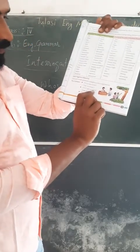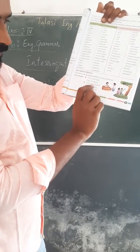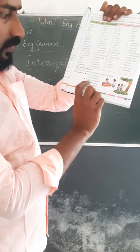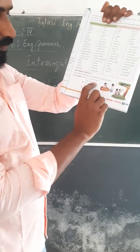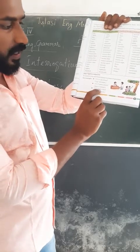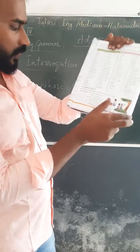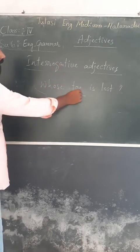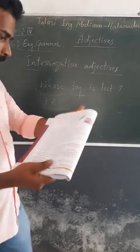'Which pen is yours?' — the word 'which' describes the noun 'pen,' asking a question about it. 'What word is this?' — here 'what' describes the noun 'bird.' Words like 'which,' 'what,' 'whose,' 'where,' 'how,' and 'when' can all be used as interrogative adjectives when they describe a noun or pronoun in a question.